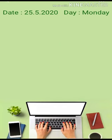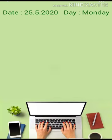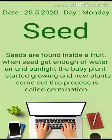Leaves of some plants we use as food. Seeds are found inside of fruit. When seeds get enough water, air, and sunlight, the baby plants start growing and new plants come out. This process is called germination — when given water, a baby plant starts from the ground and comes up.